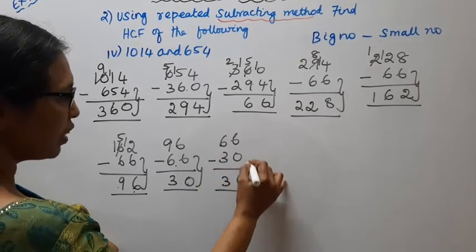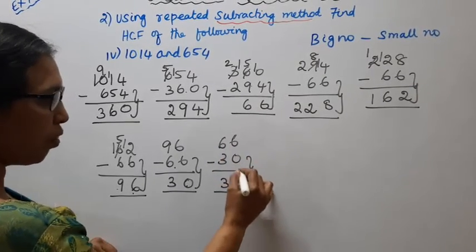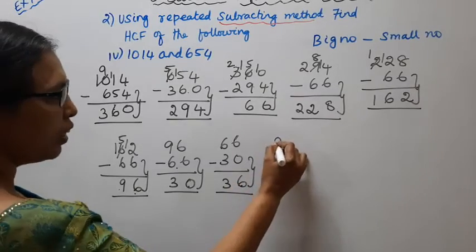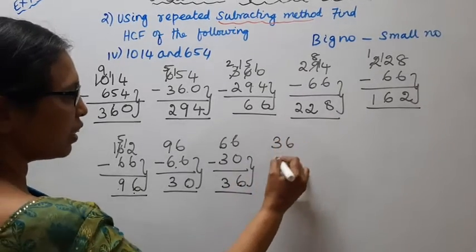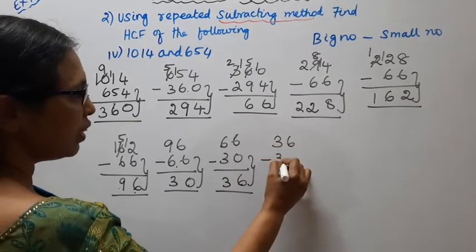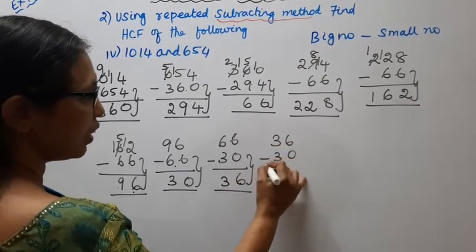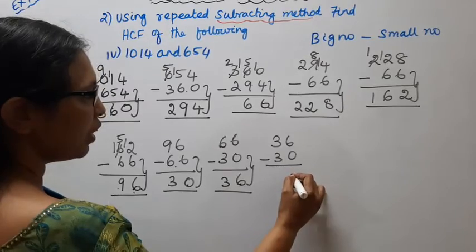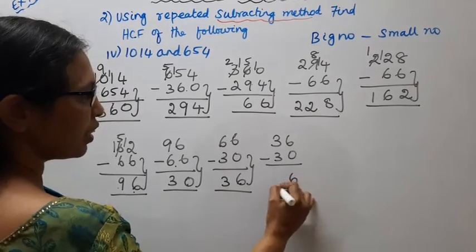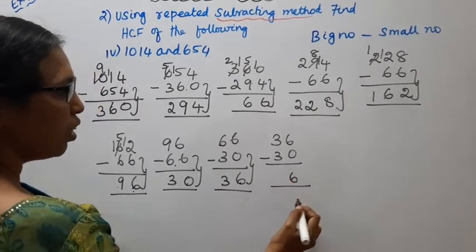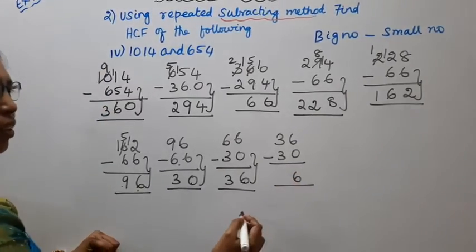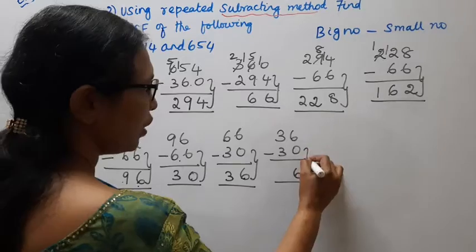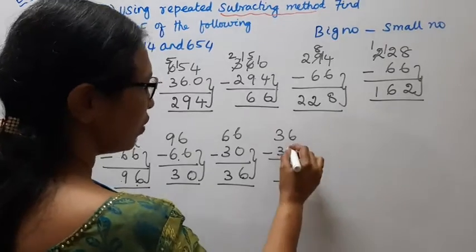This number is 36. 36 minus 30, which gives 6.